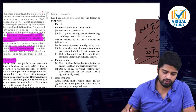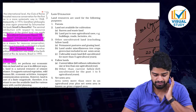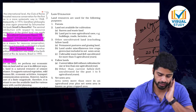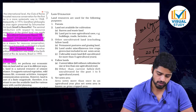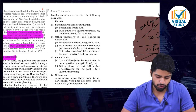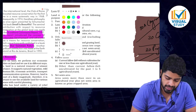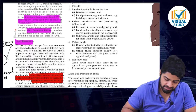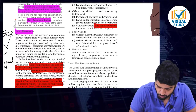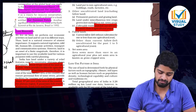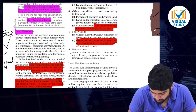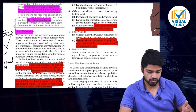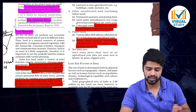Land resources are used for the following purposes: forests, land not available for cultivation, barren and wasteland, land put to non-agricultural uses, other uncultivated land excluding fallow land, permanent pastures and grazing land, land under miscellaneous tree crops, and culturable wasteland left uncultivated for more than five years. Fallow lands include current fallow land (one year or less) and other than current fallow left uncultivated for the past one to five years.